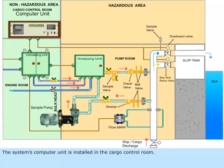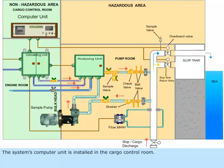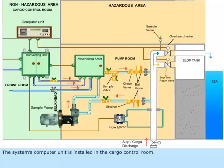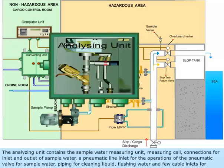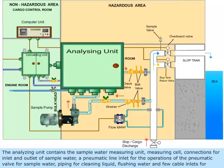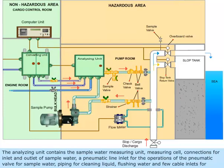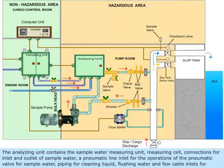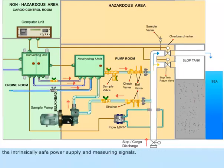The system's computer unit is installed in the cargo control room. The analyzing unit contains the sample water measuring unit, measuring cell, connections for inlet and outlet of sample water, a pneumatic line inlet for operations of the pneumatic valve for sample water.